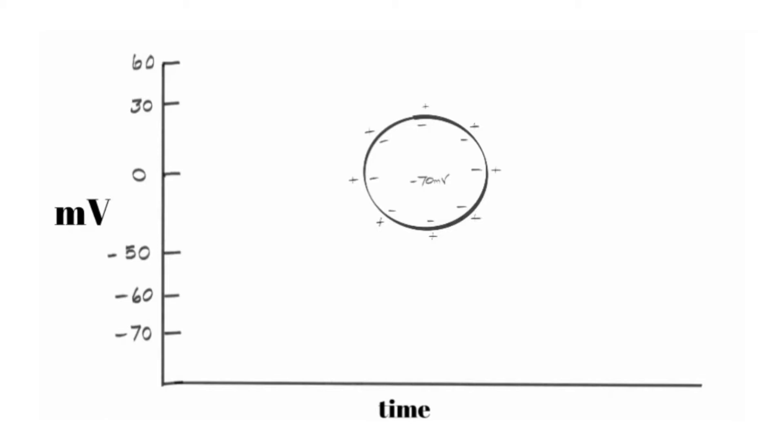That will vary based on the cell and the literature you're reading. I'm not concerned if it's negative 70 or negative 90 millivolts, but we have to have a baseline. The baseline resting state for cells in this video is going to be negative 70 millivolts.